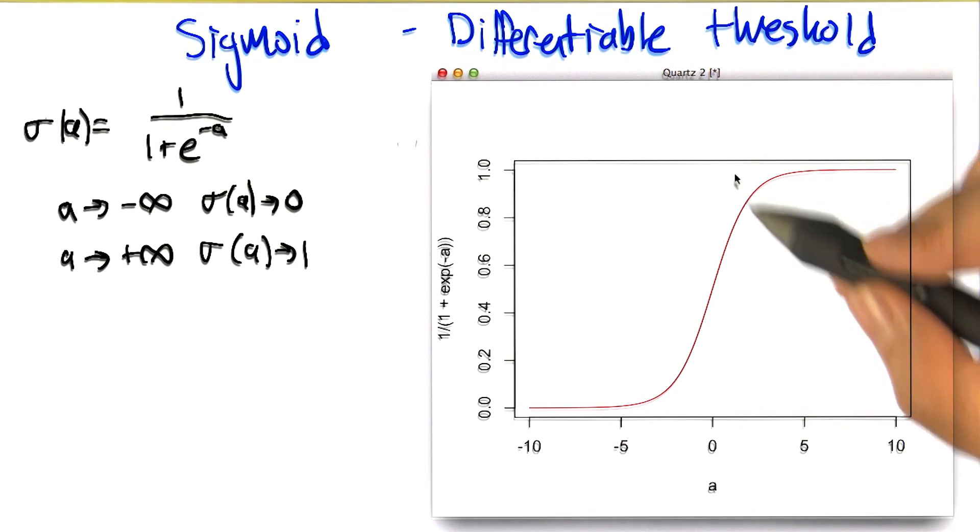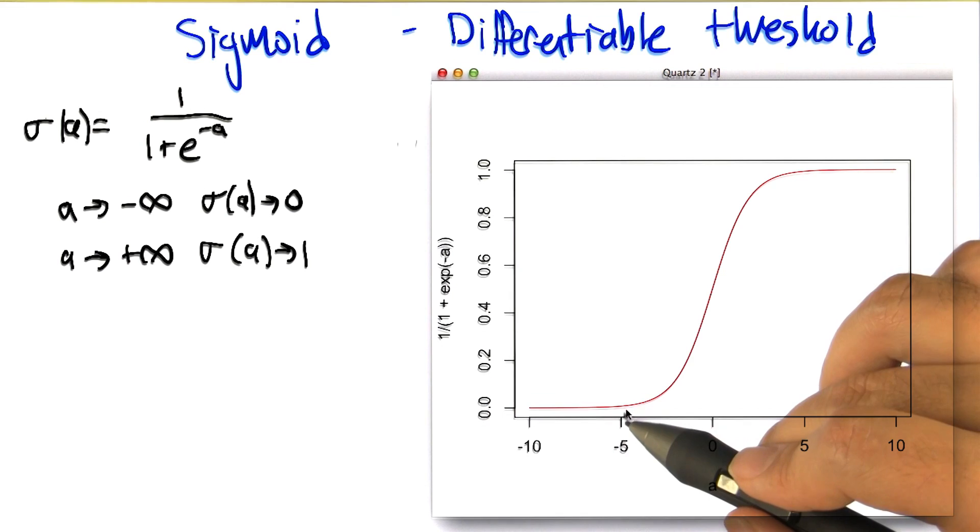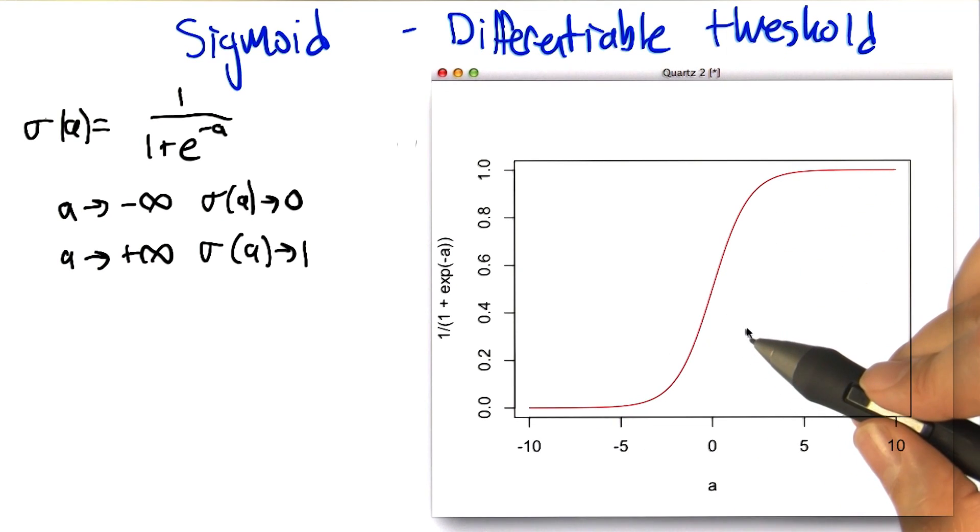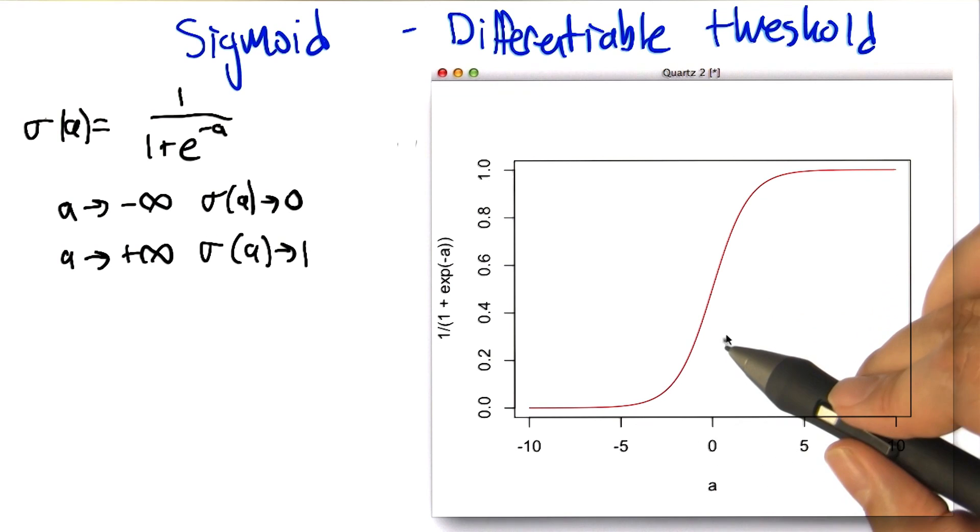So instead of just an abrupt transition at zero, we have this gradual transition between negative five and five. And this is great, because it's differentiable. So, what do you think Charles, does this answer your question?